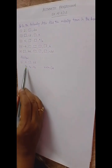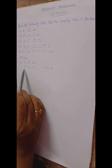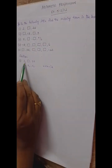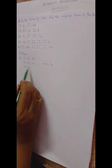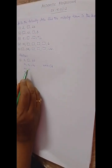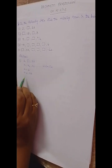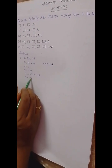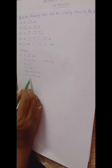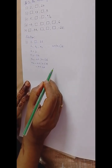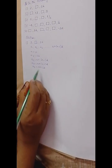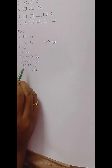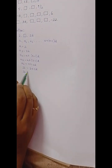The first question is: 2, _, 26. We will solve it. The terms are represented as a1, a2, a3, and so on, using the formula a plus (n minus 1) into d. Here, a1 (the first term, a) is given as 2, and the third term a3 is given as 26. The formula for an is a plus (n minus 1) into d, so a3 = a + 2d.